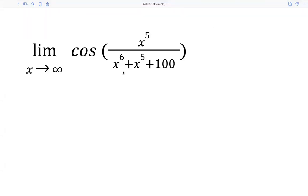Okay, let's see this limit question. x approaches infinity and the function is cosine of this rational expression. So how do we do this?